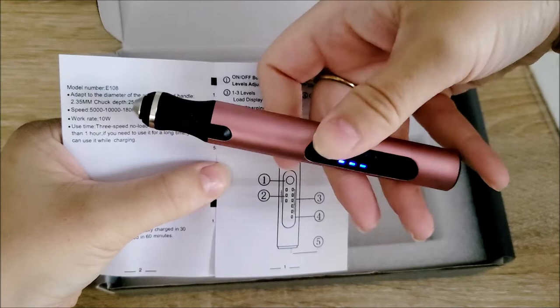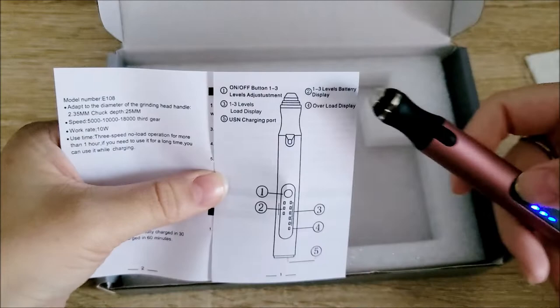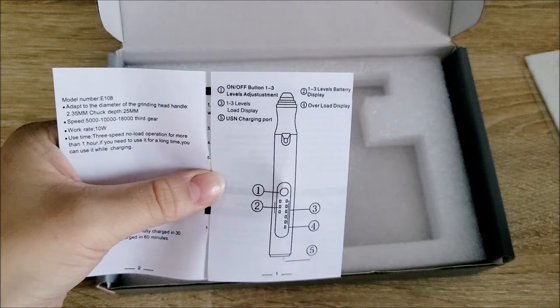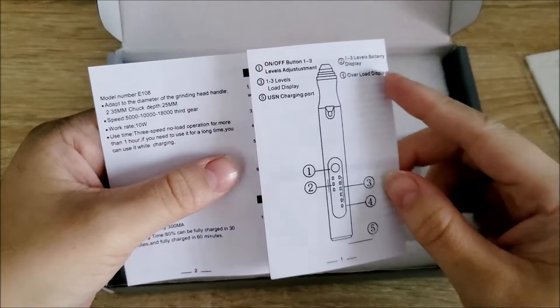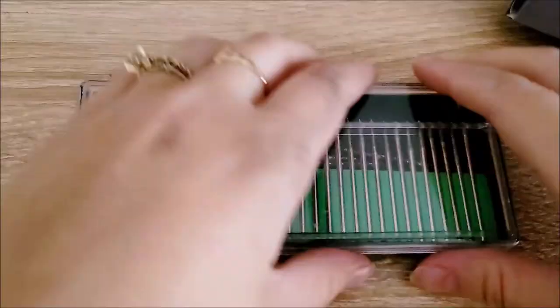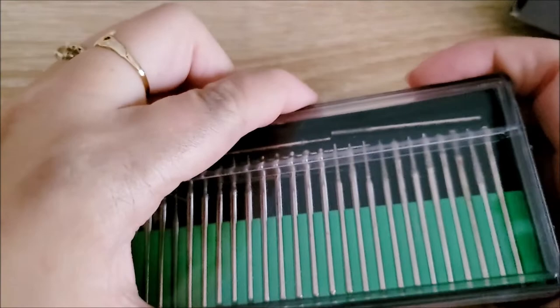It also has a level load display and it says if it goes to four or five or six then it is an overload. So I wonder if this has anything to do with keeping track of making sure that this machine does not overheat itself or damage itself or something of that nature.